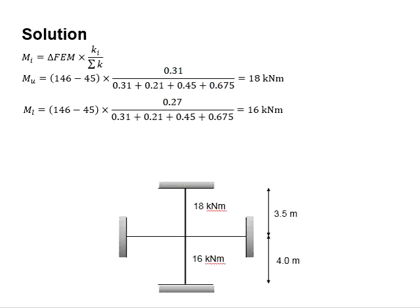You will obtain the upper moment and lower column moments given here, as illustrated. Due to the smaller effective height of the upper column, it is theoretically taking a slightly higher degree of moment in comparison to the lower column.